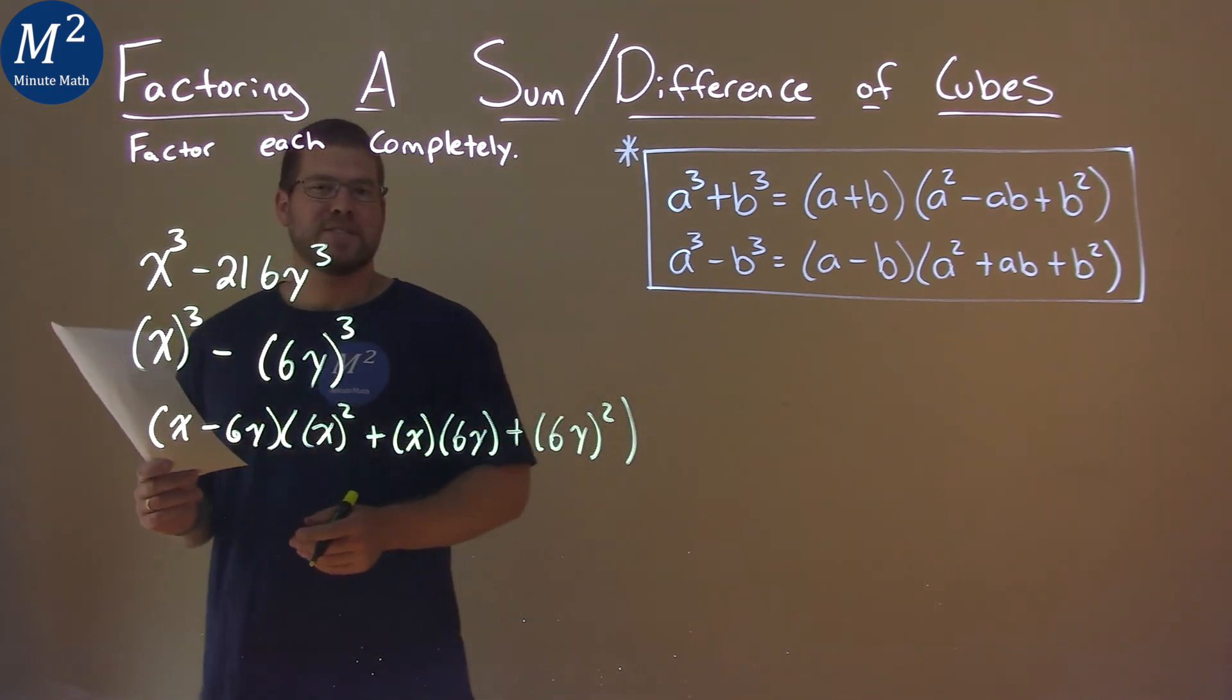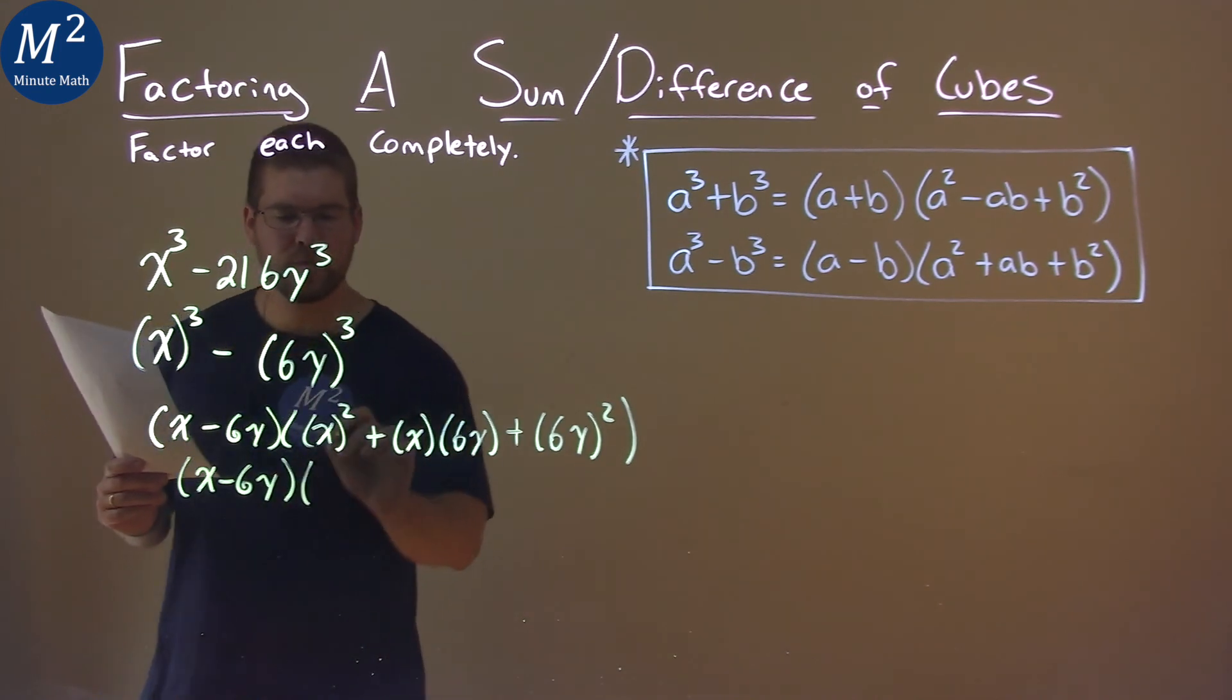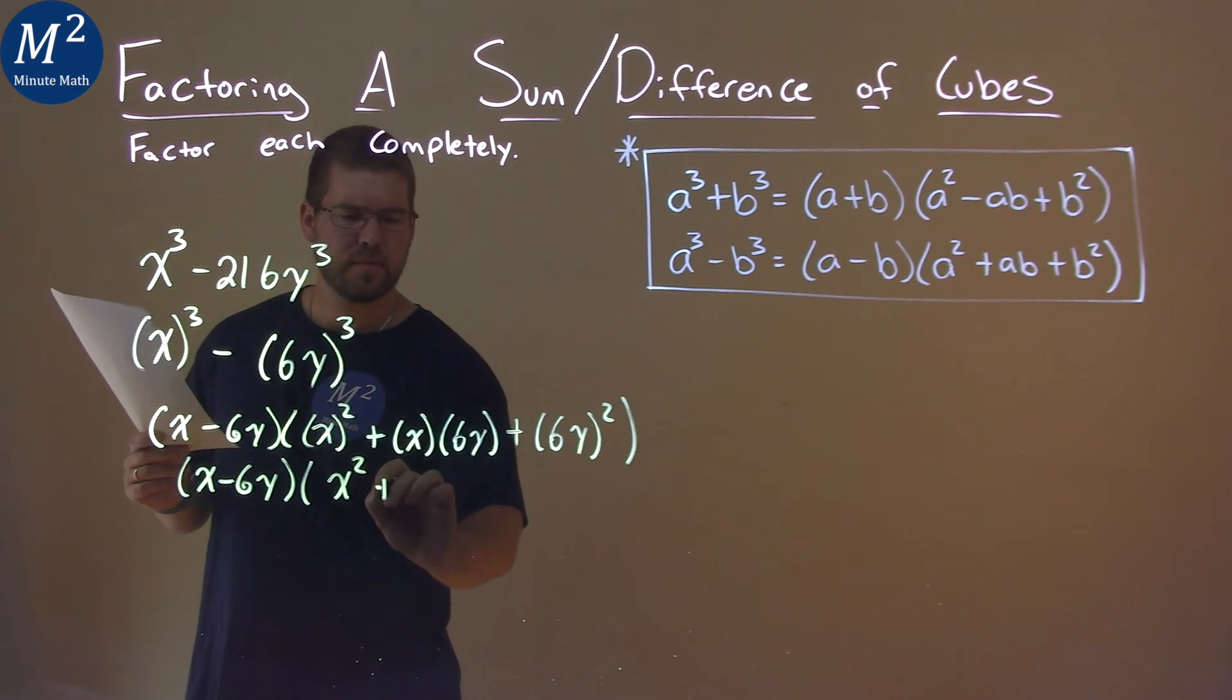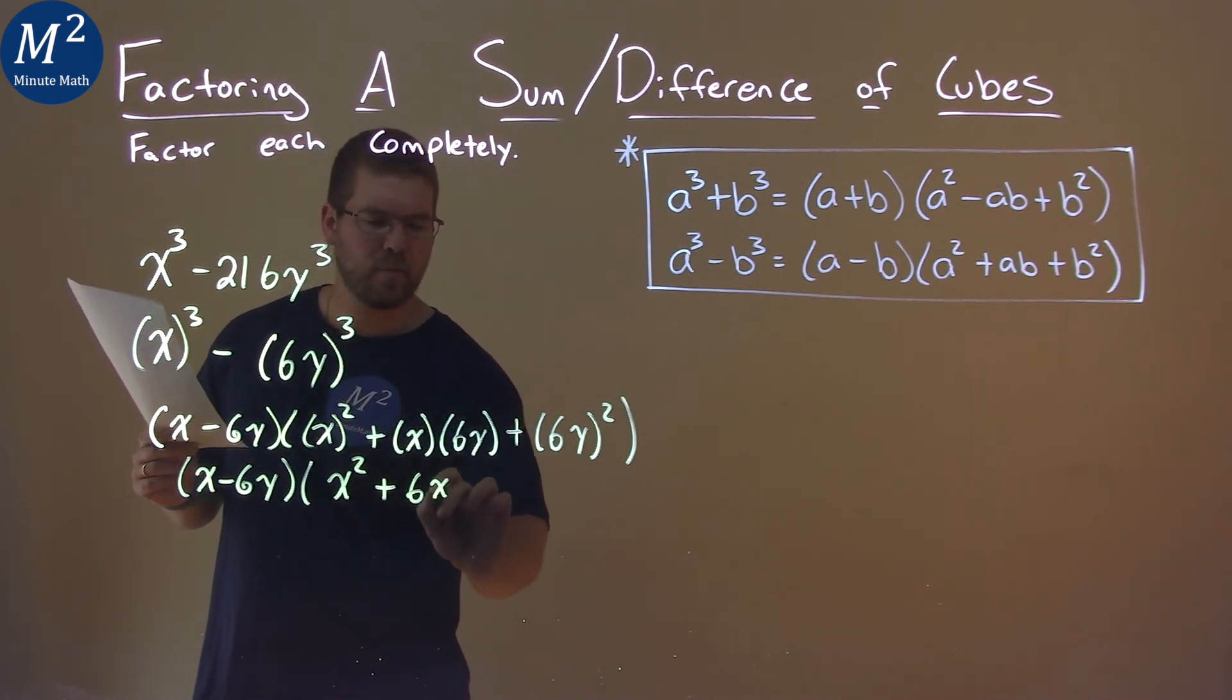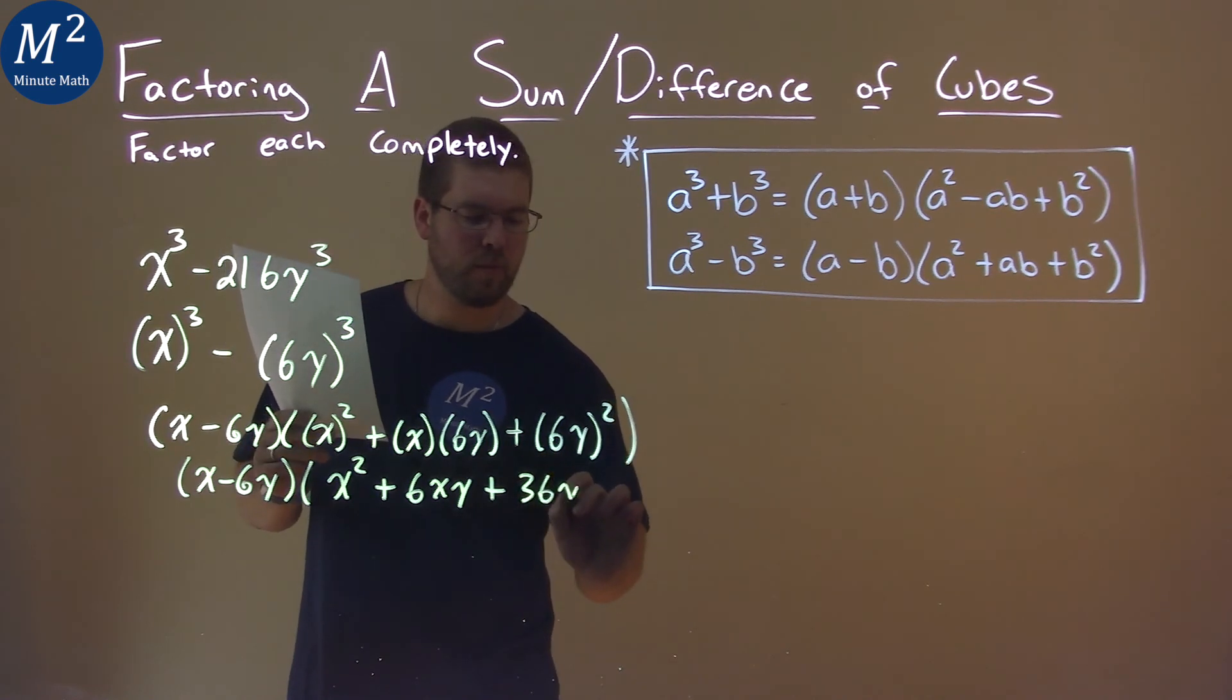Now we want to simplify. Well, the x minus 6y can just come down. Simplify the other part, x squared. Reorder this, 6xy, and then 6y all squared is 36y squared.